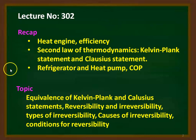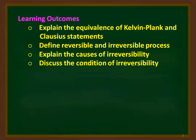In this lecture, we will be discussing the equivalence of the Kelvin-Planck and Clausius statements, the reversibility and irreversibility of a process, types of irreversibility, causes of irreversibility, and the condition for reversibility. At the end of the lecture, the student will be able to explain the equivalence of the two statements, define reversible and irreversible processes, explain the causes of irreversibility, and discuss the condition for reversibility.